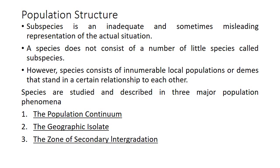Regarding population structure, the division of species into subspecies is sometimes unreasonable, as it can be quite misleading and takes us away from actual population information. A species consists of a number of demes — a deme is a local population of a species, the community of potentially interbreeding individuals at a given locality. A subspecies, however, is an aggregate of phenotypically similar populations of a species in a geographic subdivision of the range of that species, differing taxonomically from other populations.